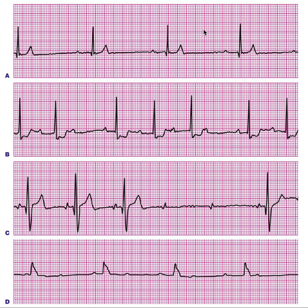In second degree there are two types: Mobitz Type 1, also called Wenckebach phenomenon, and Mobitz Type 2. In Mobitz Type 1, there is a progressive prolongation of the PR interval until a P wave is not followed by a QRS complex.